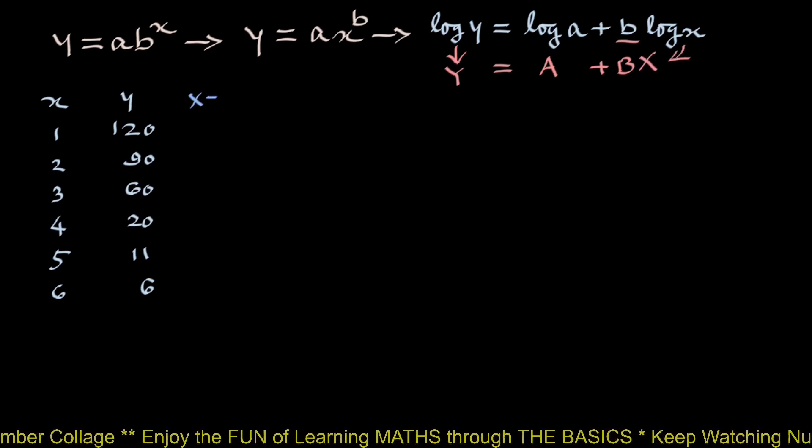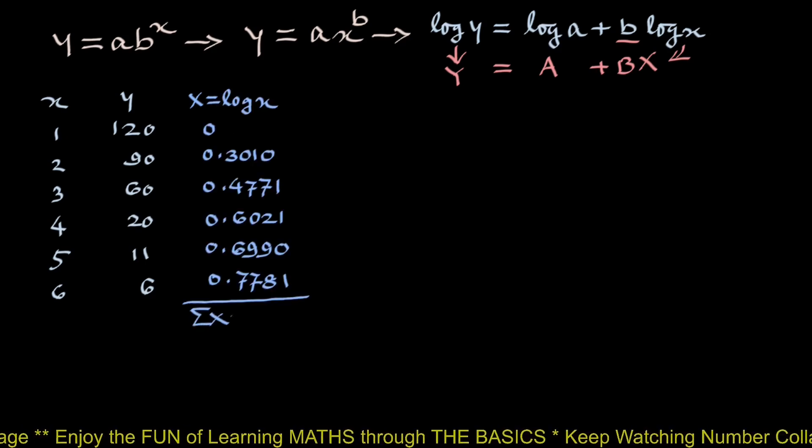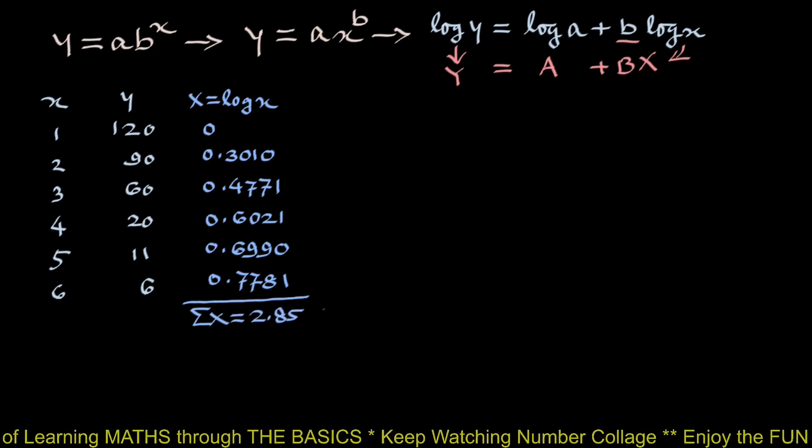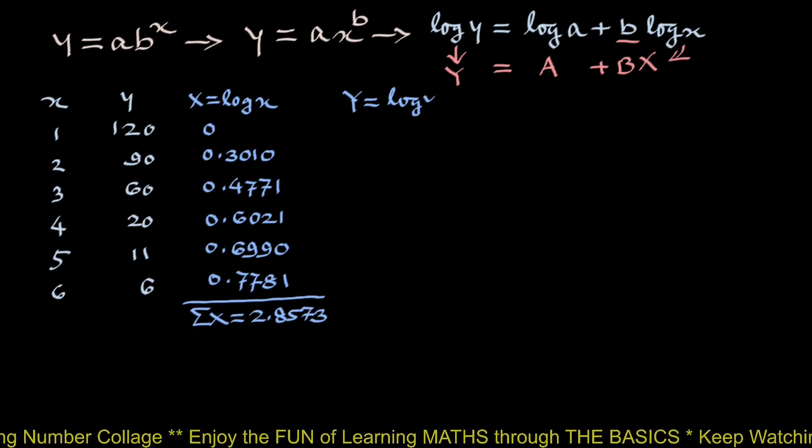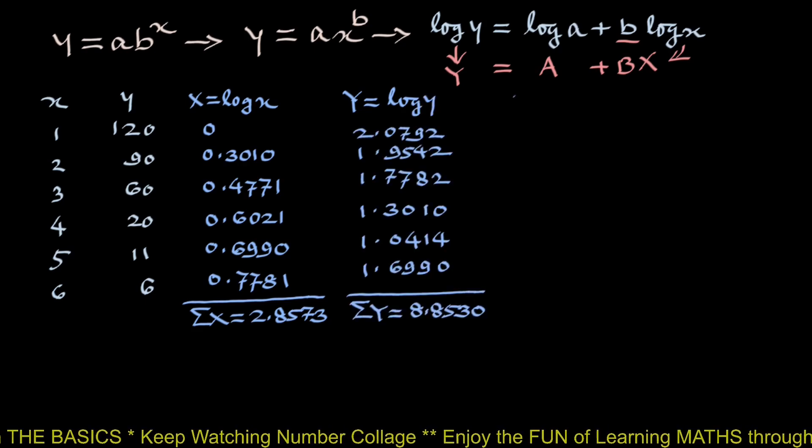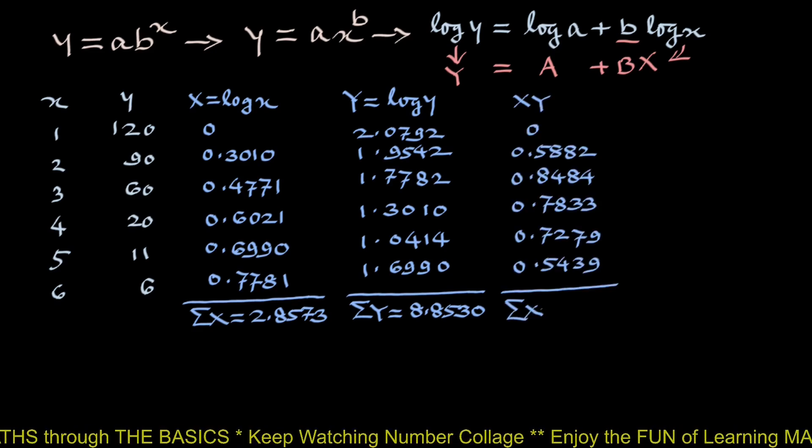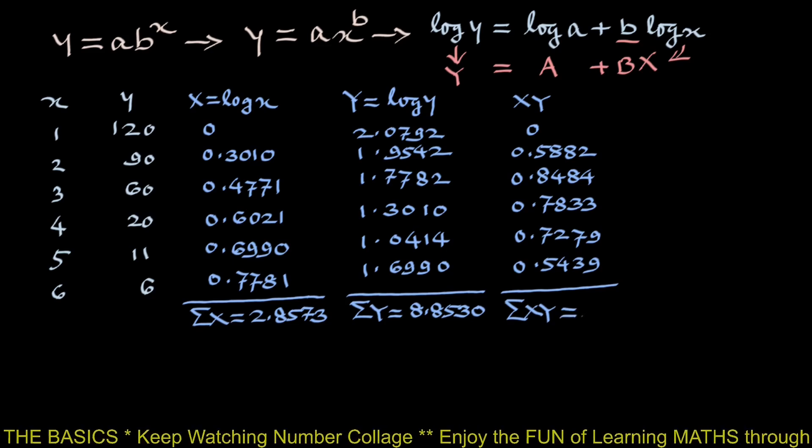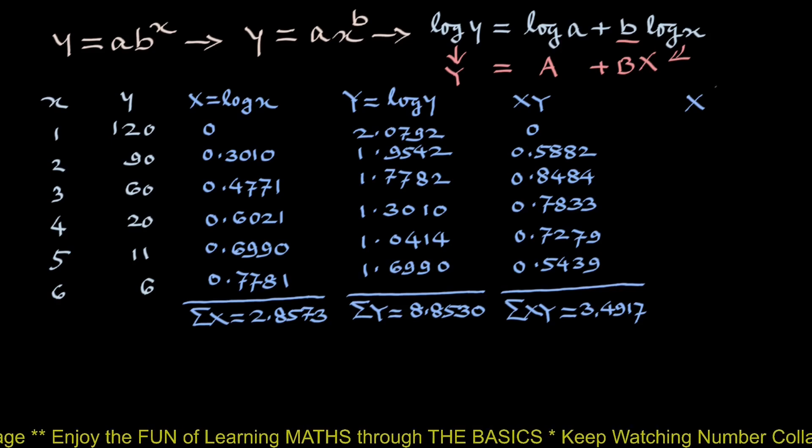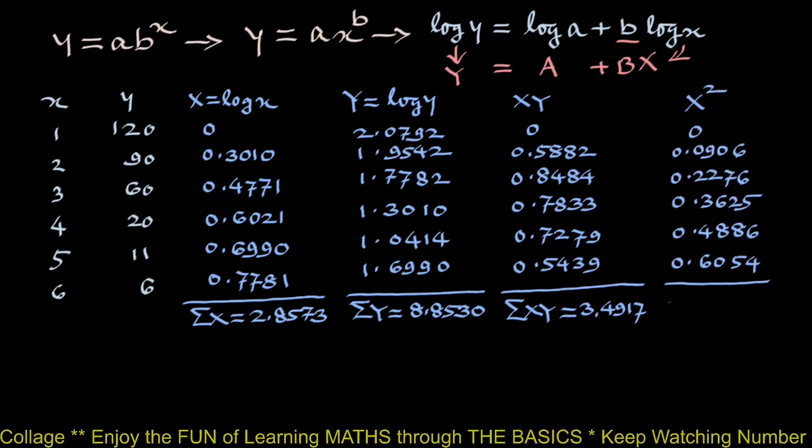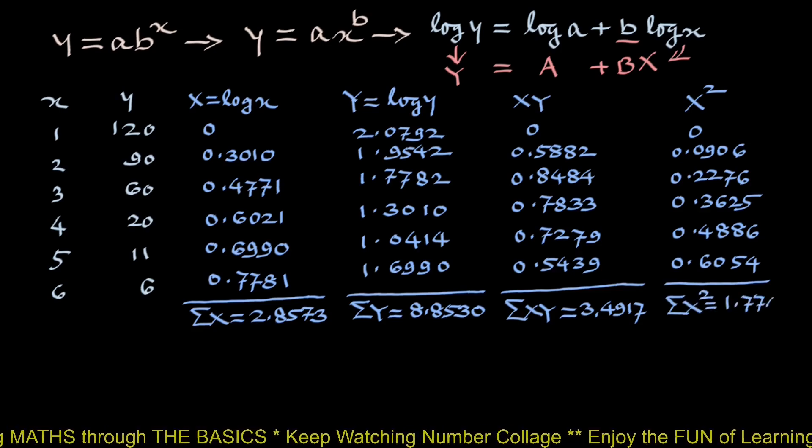Now capital X which is log small x, summation capital X is 2.8573. Capital Y is log small y, 8.8530. Product capital X into capital Y, summation is 3.4917 and final column capital X square and summation capital X square is 1.7747.